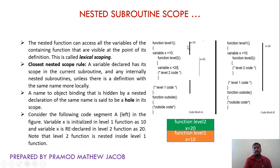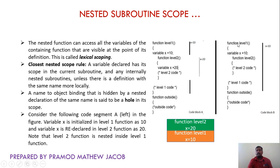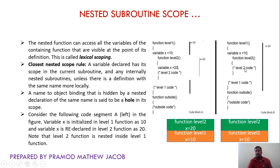A name-to-object binding that is hidden by a nested declaration of the same name is said to be a hole in its scope. That is, x = 10 has scope across the entire program, but during the execution of function level 2 there is a nested redeclaration of the same variable name x as 20, creating a hole. Now consider the same code where function level 1 declares x = 10 and calls function level 2, but inside function level 2 there is no redeclaration of x. So the scope of x is continuous throughout the entire program with no hole, because there is no redeclaration of x in the subroutine.